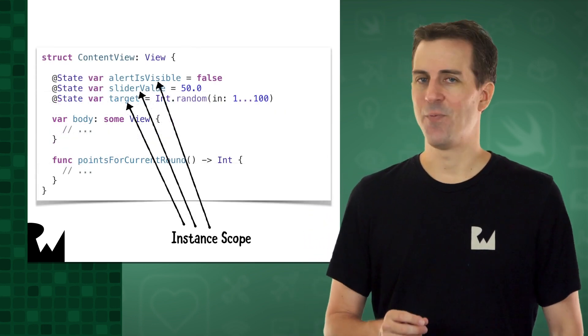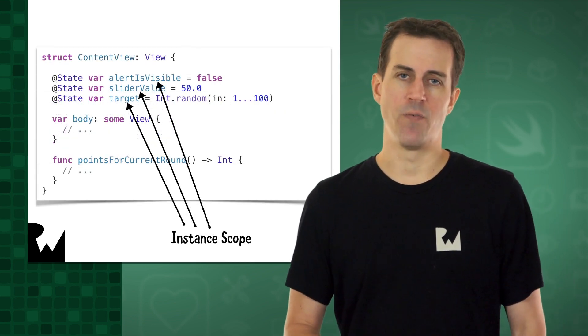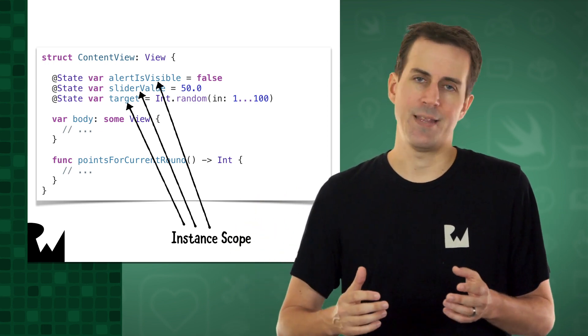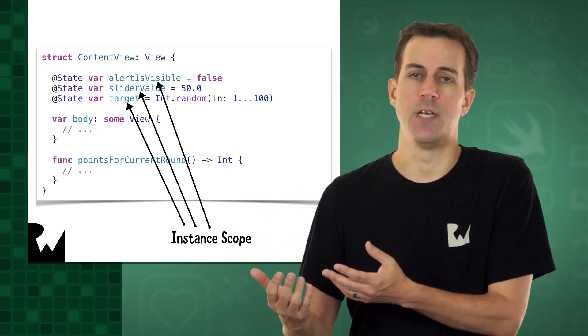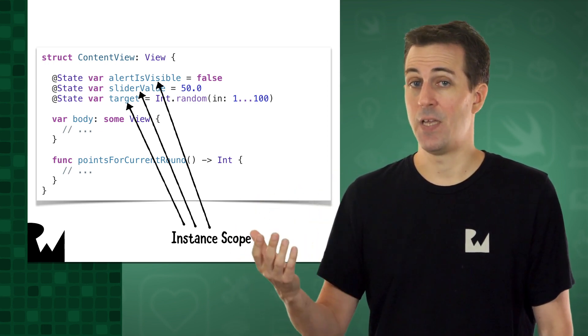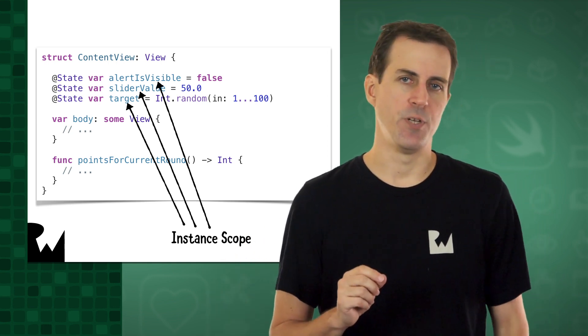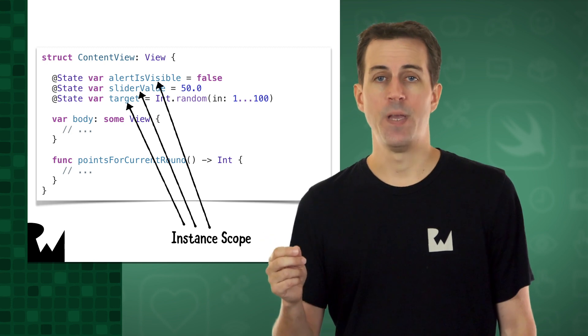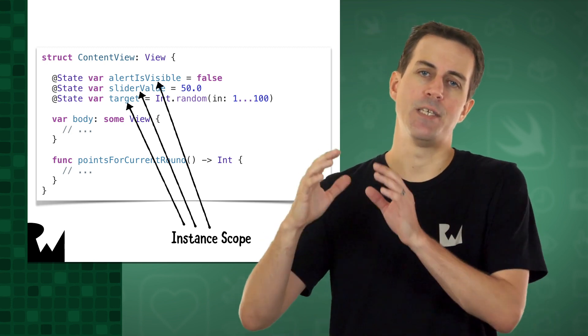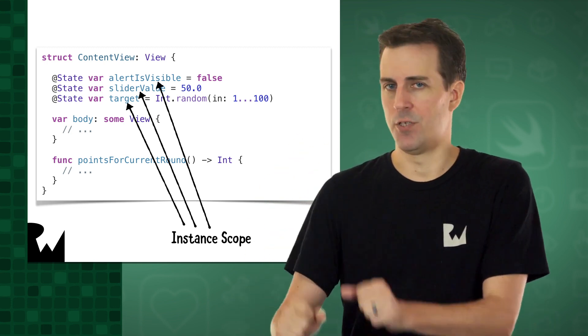The alertIsVisible, sliderValue, and target variables, however, live on — at least as long as the ContentView that owns them does. ContentView exists until the user terminates the app. This type of variable is called a property, and its scope is the same as the scope of the object it belongs to. In other words, we can't use the local variable roundedValue from pointsForCurrentRound inside the callback for the button tap, because that variable will be out of scope when the button is tapped.